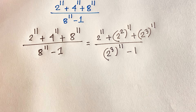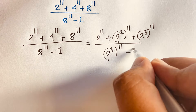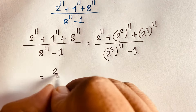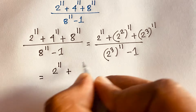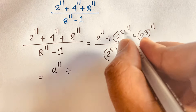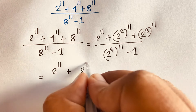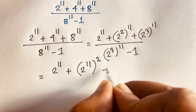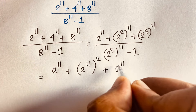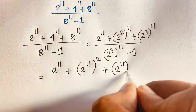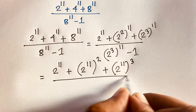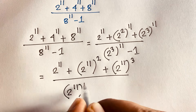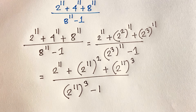Now I can see easily: moving the exponent inside the bracket, the numerator becomes 2 to the power 11, plus 2 to the power 22, plus 2 to the power 33, over 2 to the power 11 cubed minus 1.